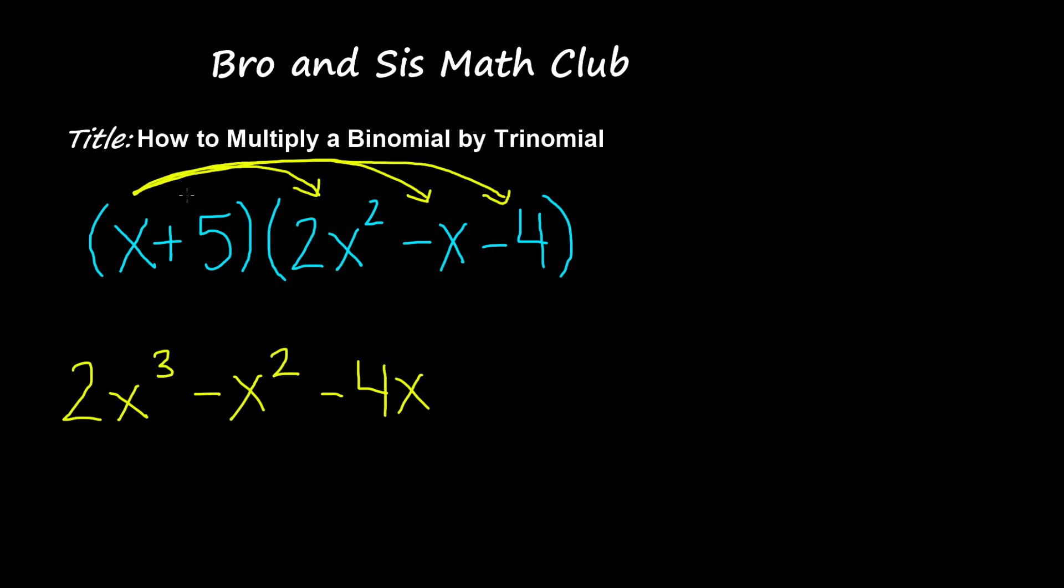Now we multiply x with negative 4 and that gives us negative 4x. Alright, now we're done distributing the first term in this binomial. Now we take the second term and distribute it also. So we do the same.